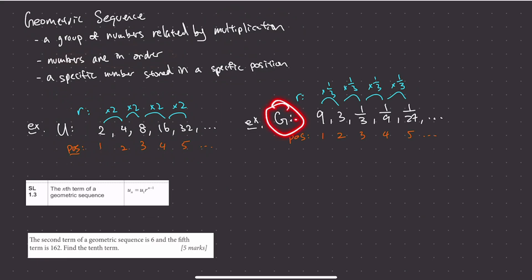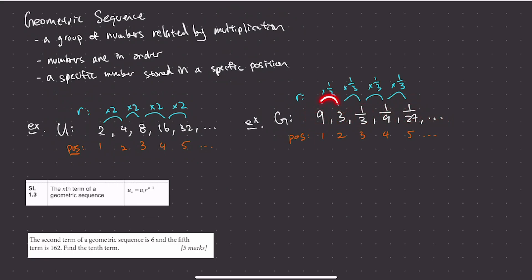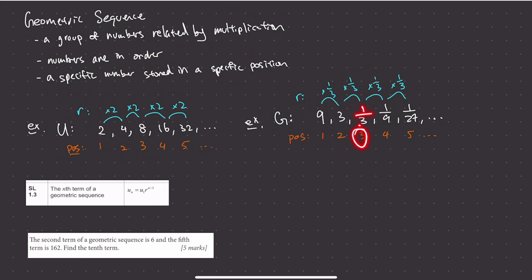Another example: a geometric sequence named g has the numbers 9, 3, 1/3, 1/9, 1/27, and so on. This is a geometric sequence because the numbers are related by a multiplication of 1/3. You could think of it as dividing by 3, but to keep things simple we just think of it as multiplying by 1/3 each time. So the common ratio is 1/3. The value 9 is in position 1, the value 3 is in position 2, 1/3 is in position 3, and so on.